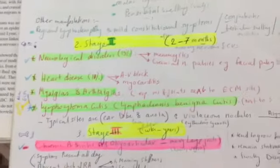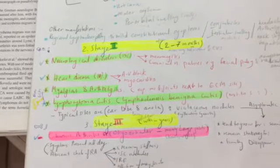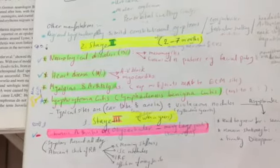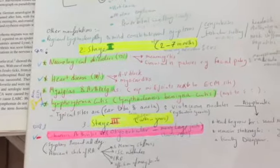Stage 2 after 2 to 7 months: neurological manifestations 15%, heart disease 10%, myalgia and arthralgia, and lymphocytoma cutis.